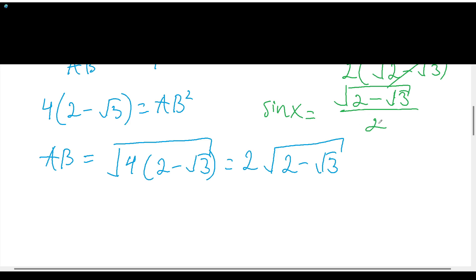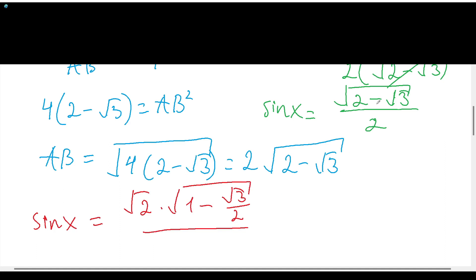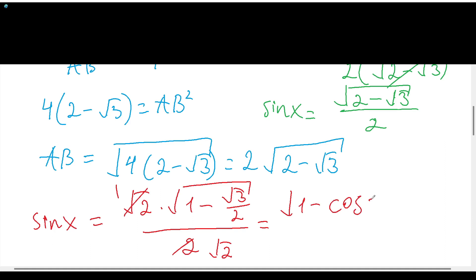But how is that so? I'll write it down to prove it. Sine x equals this expression. However, if we say that this expression equals √2 · √(1 − √3/2) over 2, this gives us the numerator over 2. We can cancel these two expressions and get √2 and 1 here. We can easily say that √3/2 is cosine 30°, giving us √(1 − cos 30°) over √2.